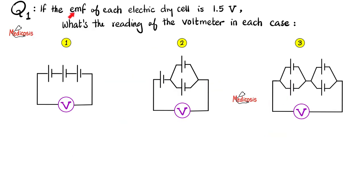Let's practice what we preach. If the electromotive force of each electric dry cell is 1.5 volts, what is the reading of the voltmeter in each case? In case 1, in case 2, and in case 3. Please pause the video and try to solve this yourself.